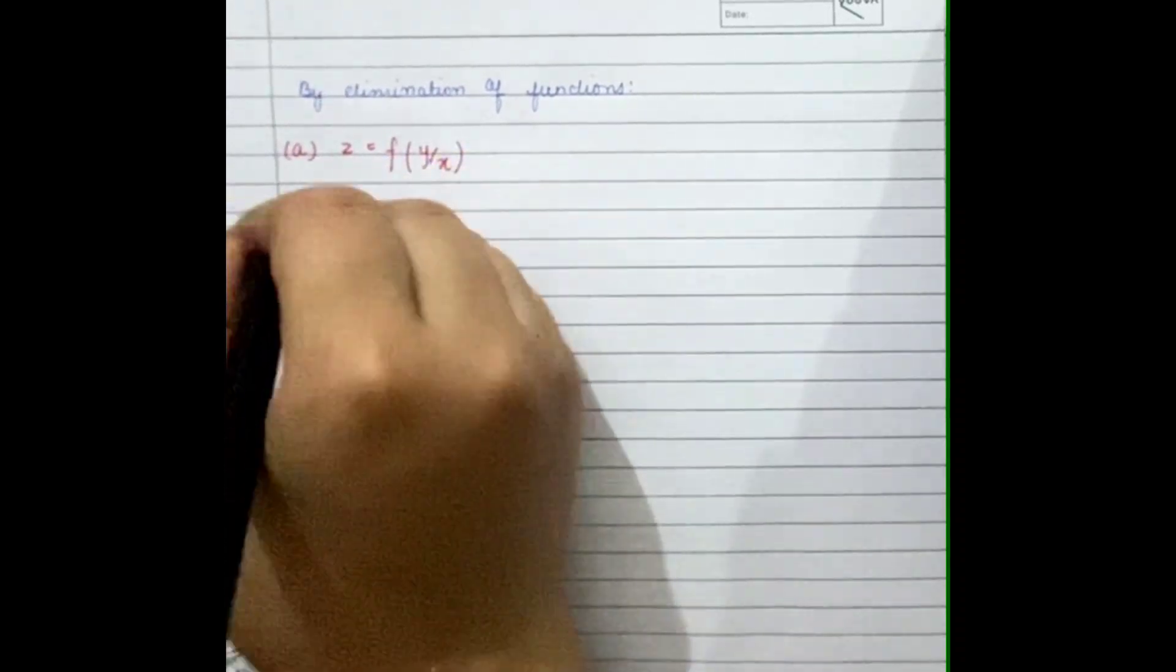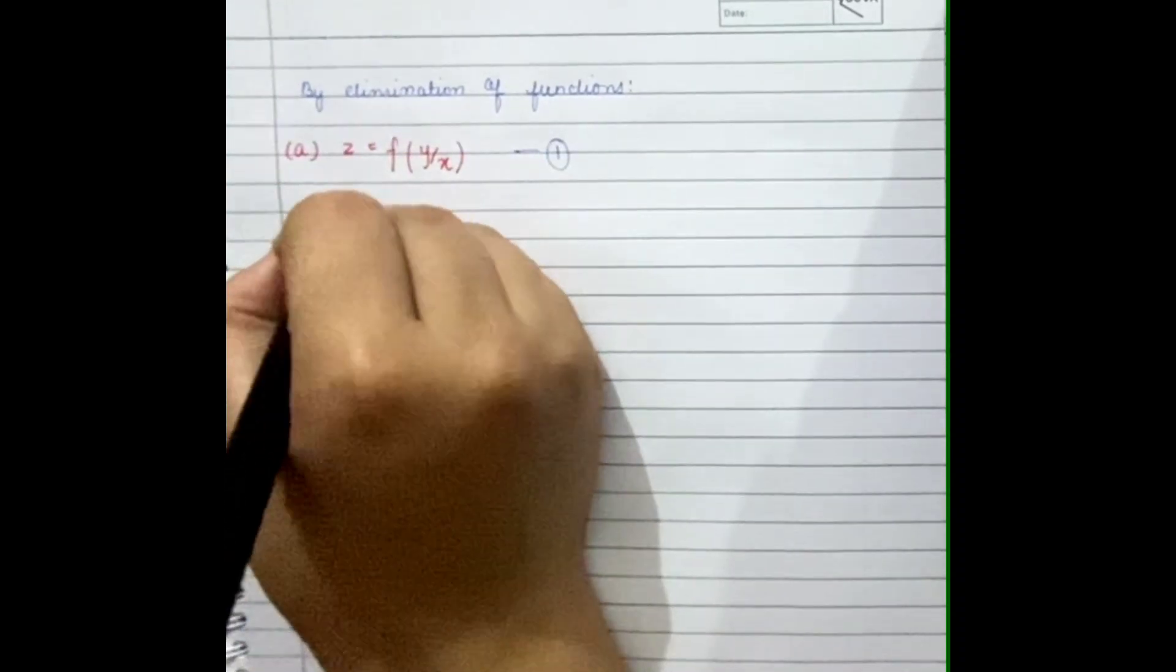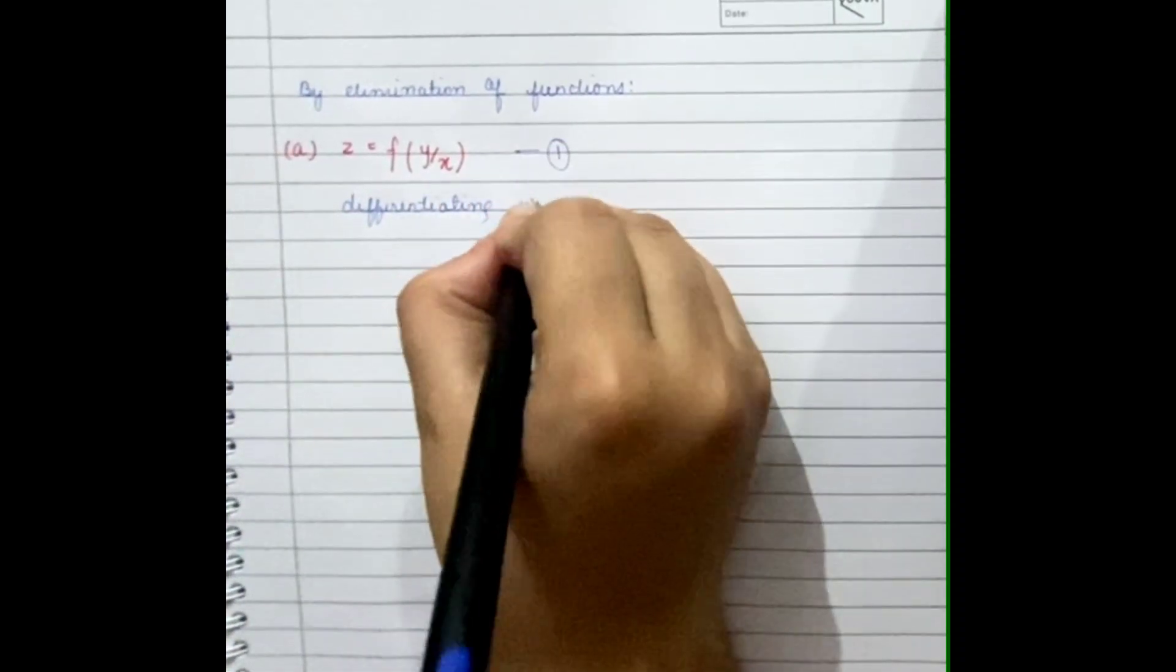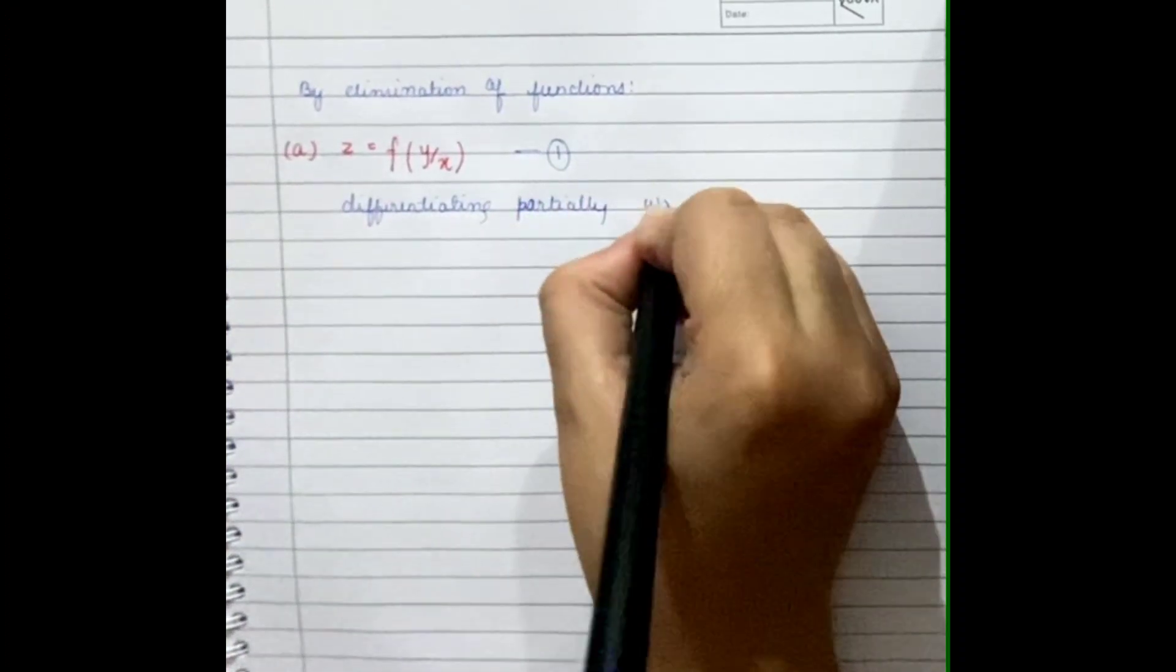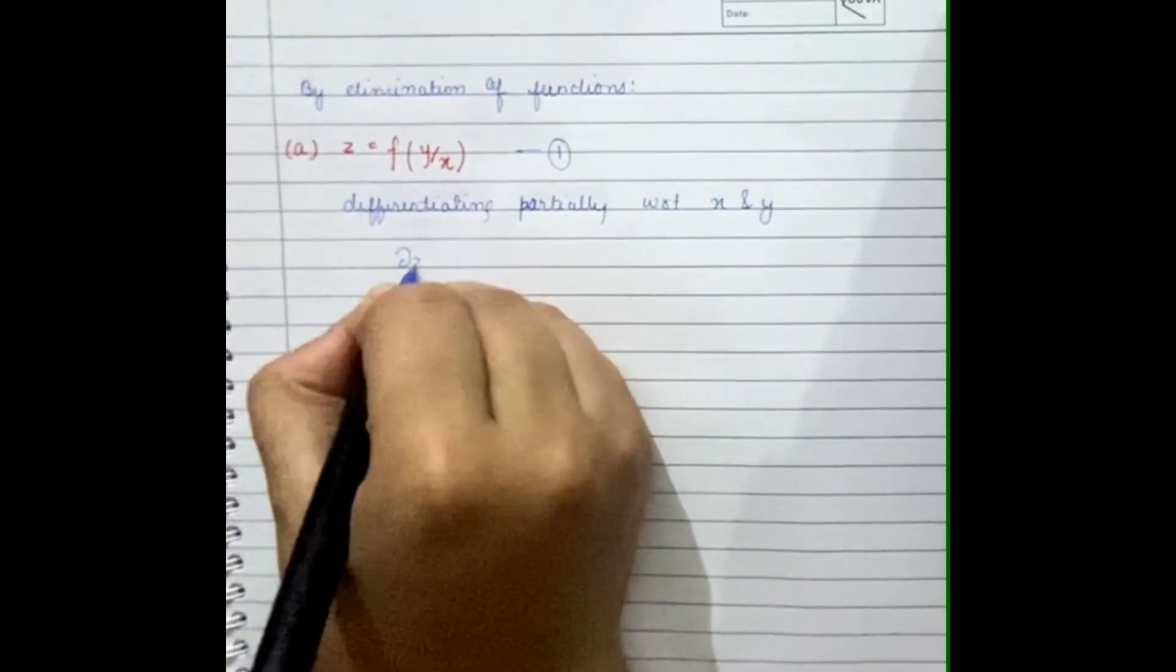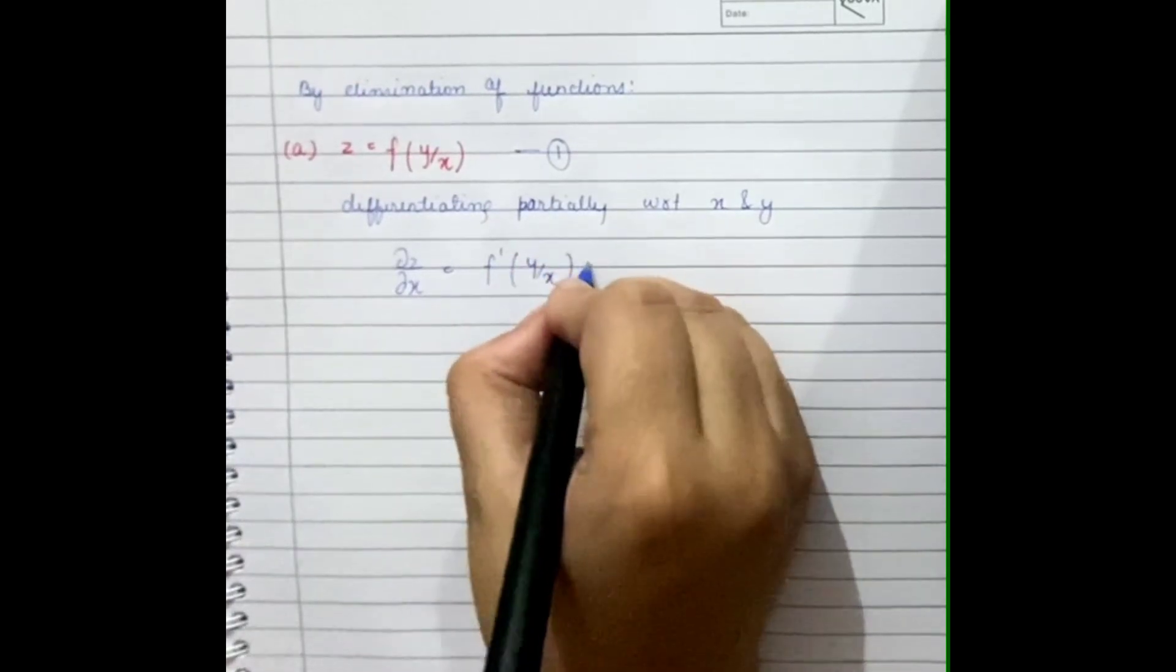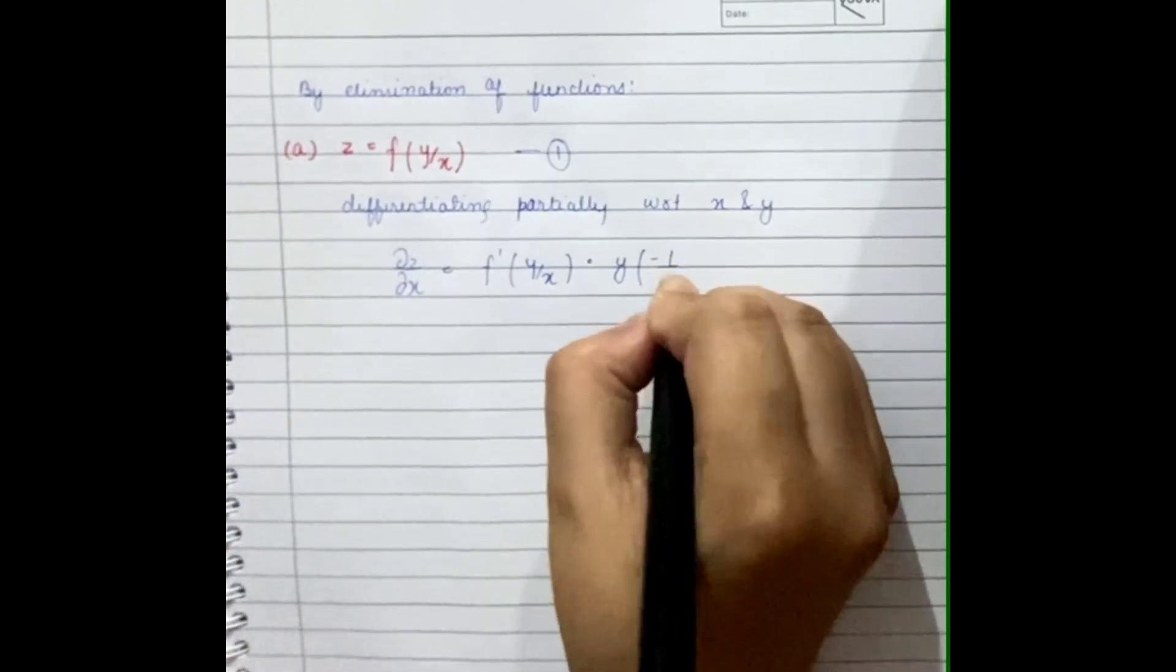Now let's consider this as equation one. Differentiating partially with respect to x and y, we get del z del x equal to f dash of y by x into y minus 1 by x square.